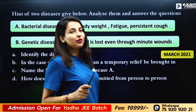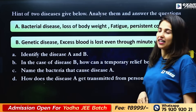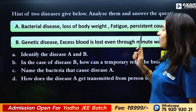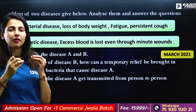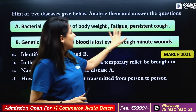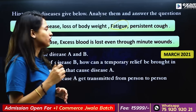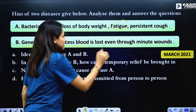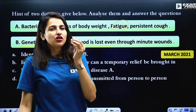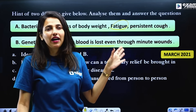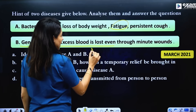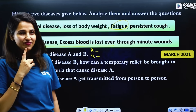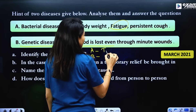In this question, I have to answer two questions. The symptoms include loss of body heat, fatigue, persistent cough. This is a genetic disease where blood clotting is slowest even through minor wounds. Identifying diseases A and B: disease A is tuberculosis.